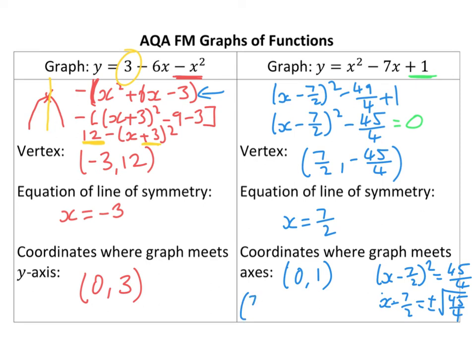So, 1 is going to be 7 over 2 minus, actually, hold on, why don't I put it in one big equation? Give me a second. There we go. So, I'm going to do it as this.